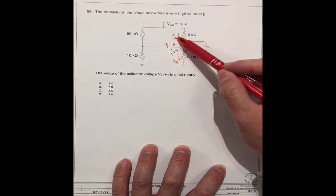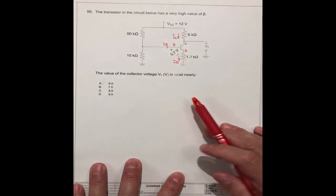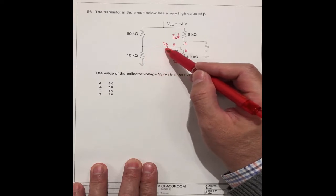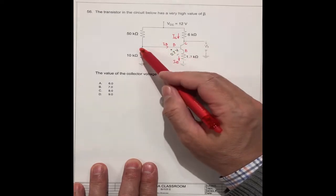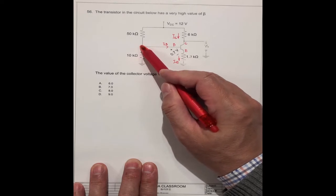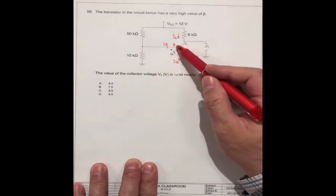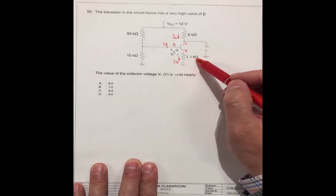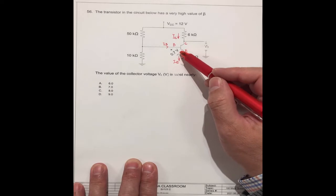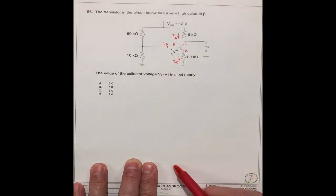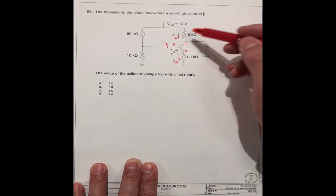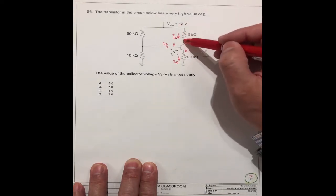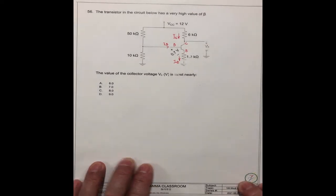So if we can find the emitter current IE, we can get IC. And how do we get this current? In this circuit, if we can find the voltage at the base node, and we know the voltage between these two points, and we know the resistor is 1.3kΩ, then we can get the current. Then we can get the collector voltage.